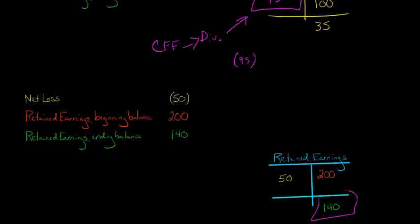So we start at $200, we get to $140, and we know that we had a net loss of $50. Now a net loss, in contrast to net income—remember net income increases retained earnings—well, a net loss is going to decrease retained earnings.